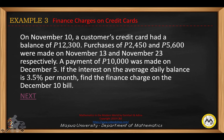On November 10, a customer's credit card had a balance of $12,300. Purchases of $2,450 and $5,600 were made on November 13 and November 23, respectively. A payment of $10,000 was made on December 5. If the interest on the average daily balance is 3.5% per month, find the finance charge on the December bill.